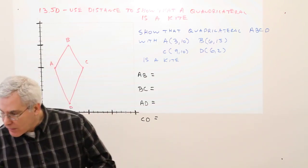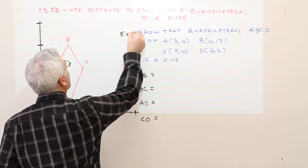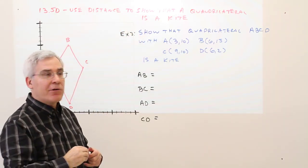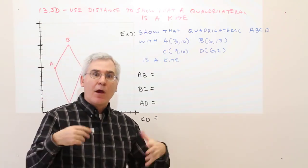So this is actually example three. Show that quadrilateral ABCD with these four coordinates is a kite.